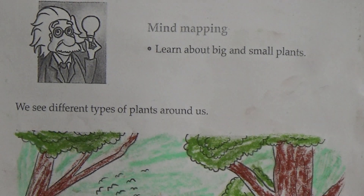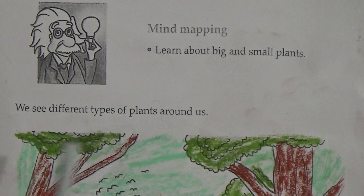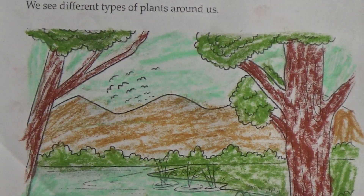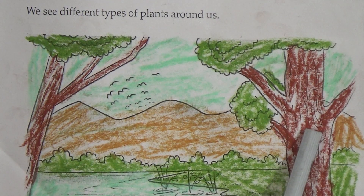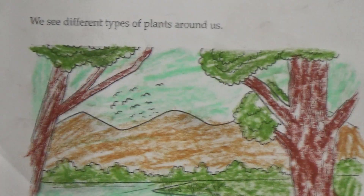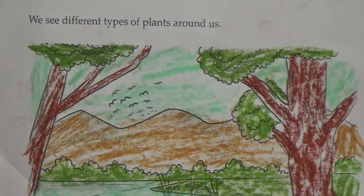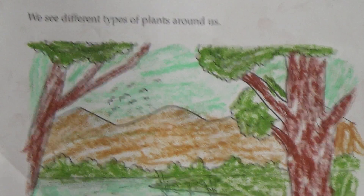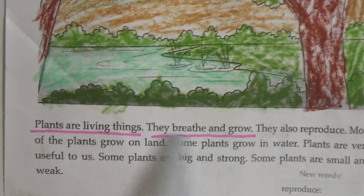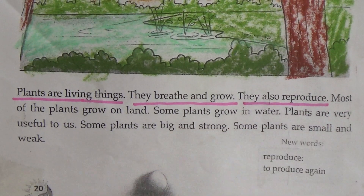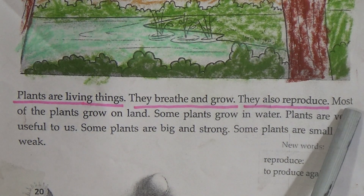Open your general science book and follow this class with your textbook. Chapter 3: The Plant Kingdom. We see different types of plants around us. See this figure — here are some pictures of trees. Plants are living things. Underline this line: plants are living things. They breathe and grow. Plants can breathe and grow — these are the characteristics of living things.